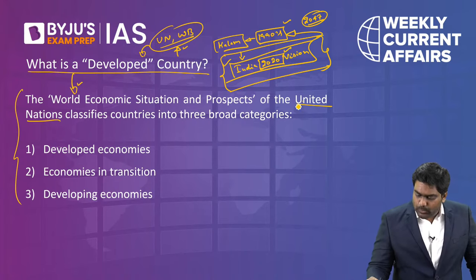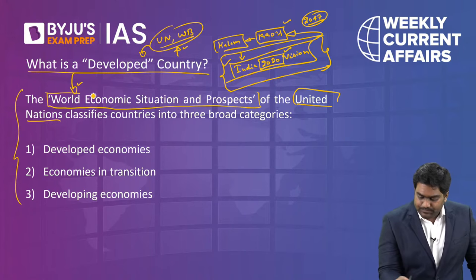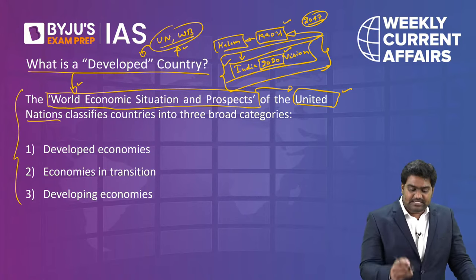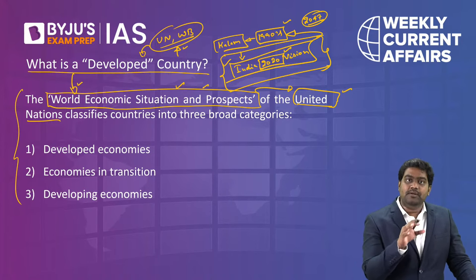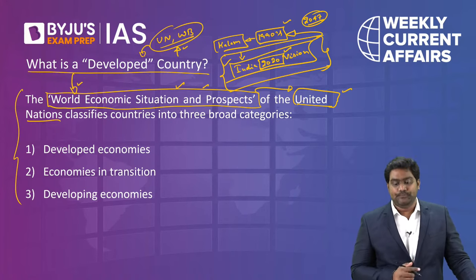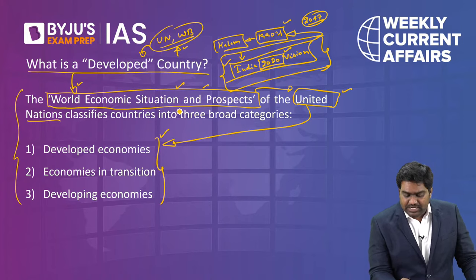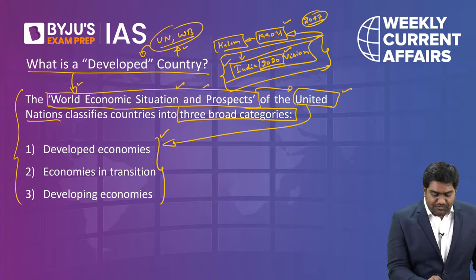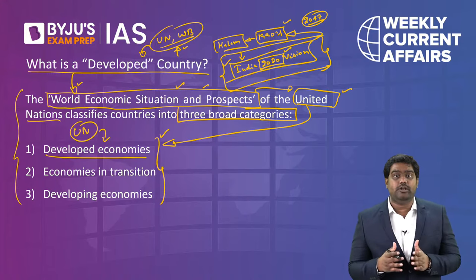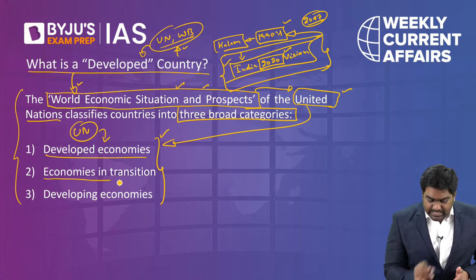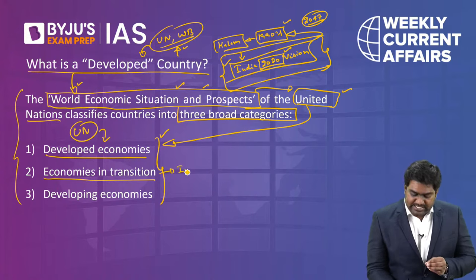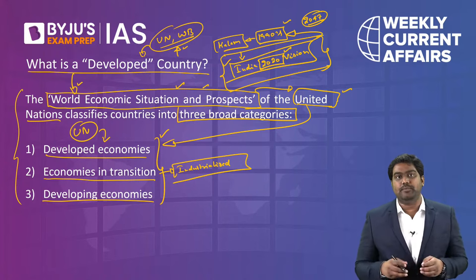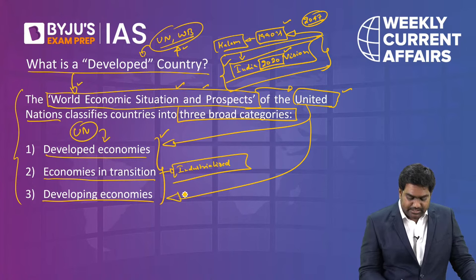According to the UN, countries are placed into three broad categories based on their economic and socio-economic performance: developed economies (typically Western countries), economies in transition (industrialized nations), and developing economies. This assessment is based on certain parameters developed by the World Bank, which uses per capita national income — the per capita GNI or Gross National Income — as the primary basis for grouping countries.